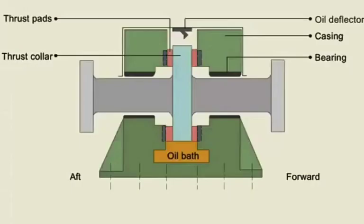The thrust block has thrust pads. When the propeller thrust acts in a ahead direction, the pads on the forward side of the thrust bearing take the propeller thrust, preventing further motion to the crankshaft. When the ship is going in the astern direction, the pads on the aft side of the thrust bearing take up the propeller thrust. Since the thrust pads are inside the thrust block, which is bolted to the main engine bed plate and then to the ship's hull, the ship starts to move.